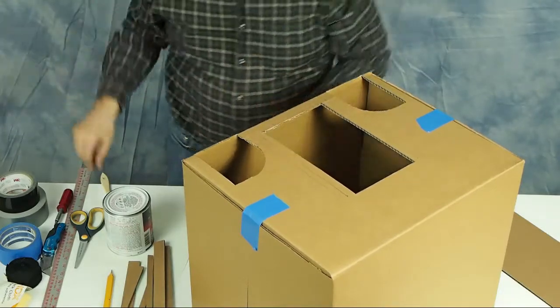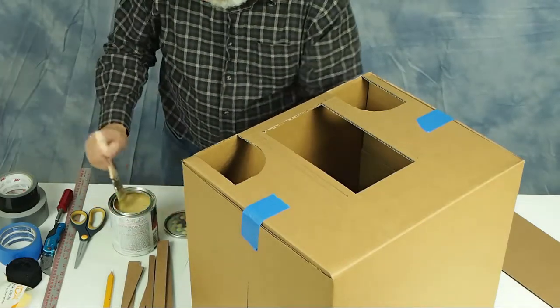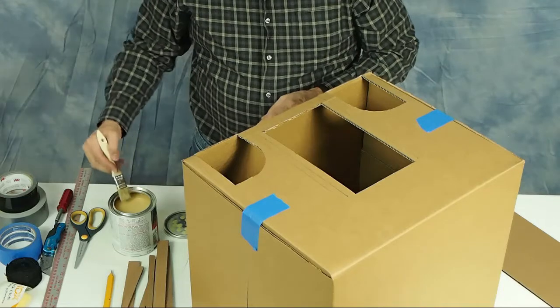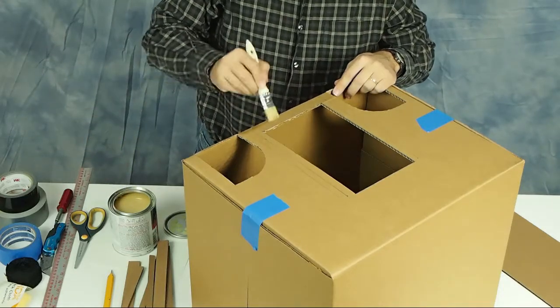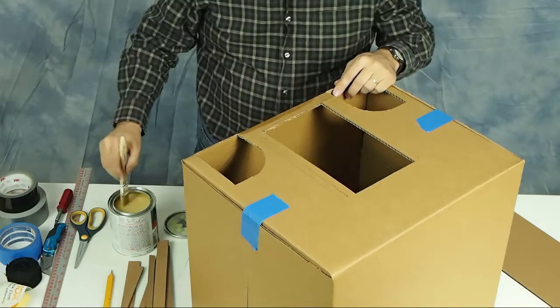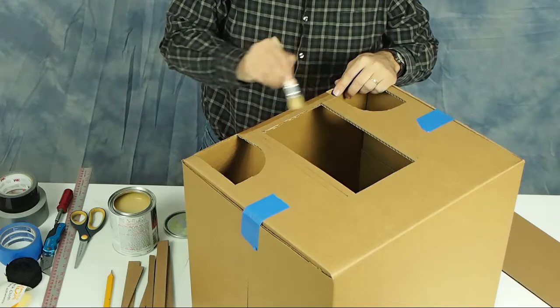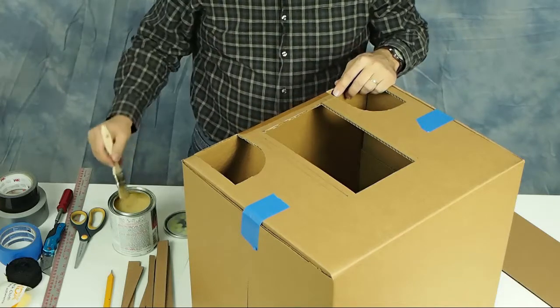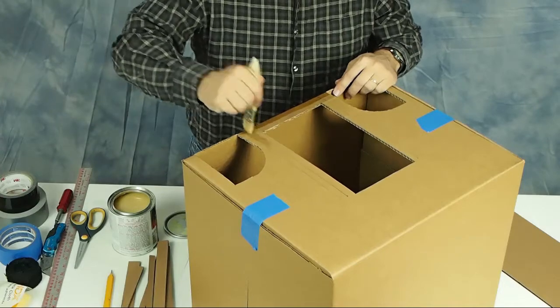One thing about contact cement and cardboard: you may find you want to put on two coats. Put on a coat of contact cement and let it tack off and dry, and then put on another layer. You get a much better bond that way.